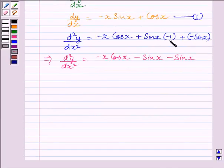As we know, minus sin x minus sin x is equal to minus 2 sin x. So, we get the second derivative is equal to minus x cos x minus 2 sin x.